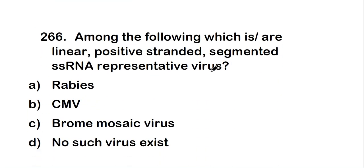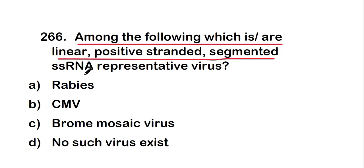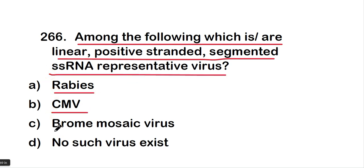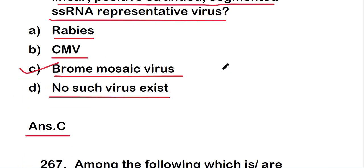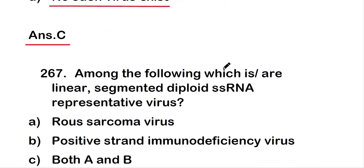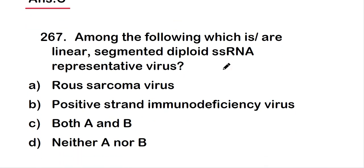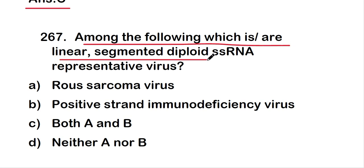The next question: among the following, which is or are linear positive-stranded segmented single-stranded RNA representative virus? The options are rabies, CMV, brome mosaic virus, or no such virus exists. The right answer is option C — brome mosaic virus.